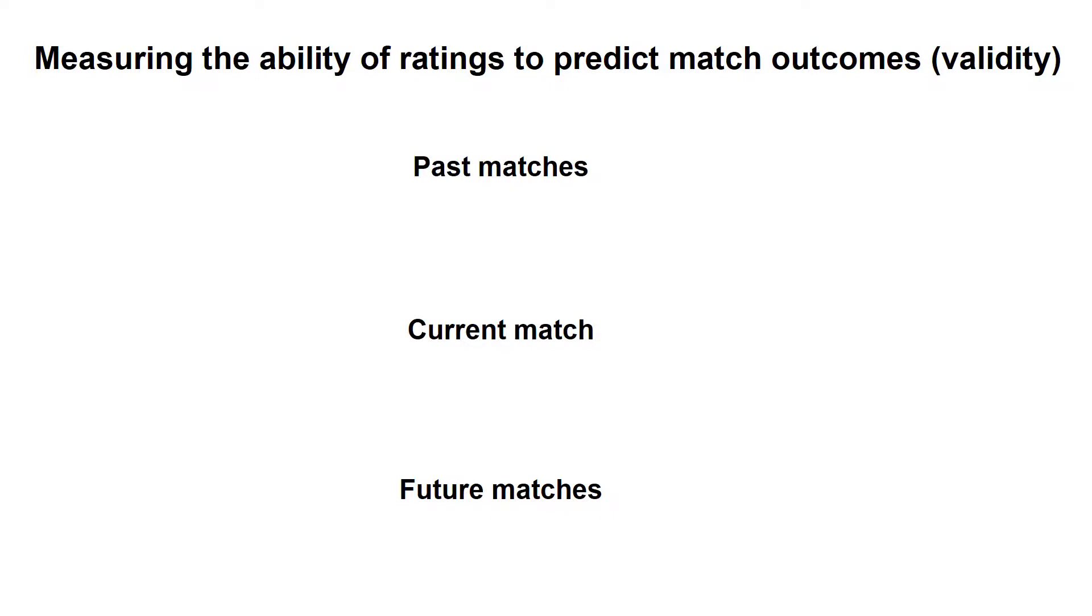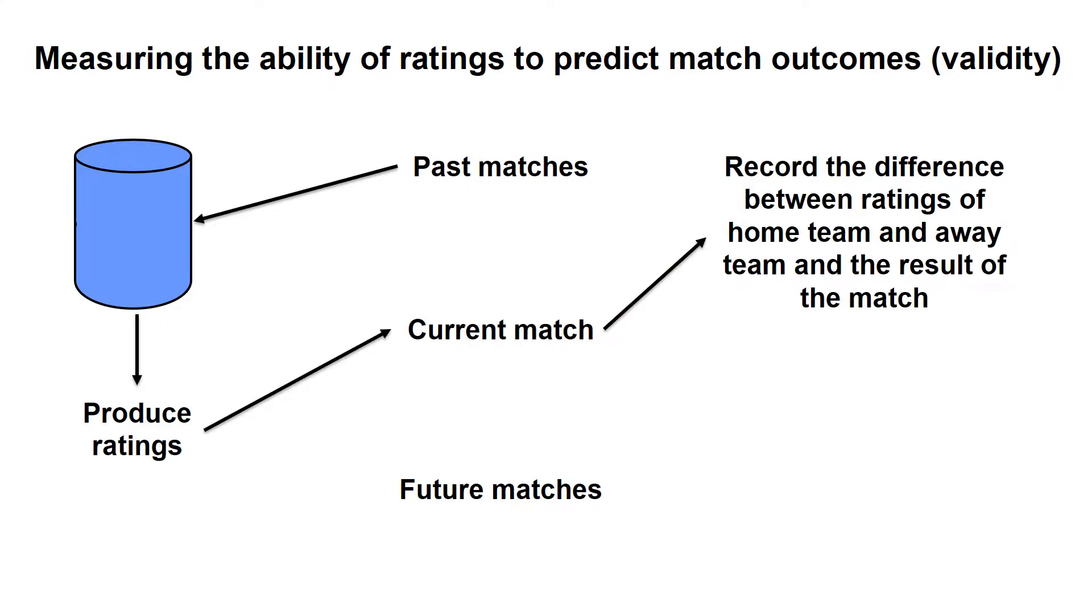Without getting too technical, here is the procedure used to evaluate how valid our ratings are. Starting with a set of past matches, we can use those to produce player ratings. For a given match, we can then calculate the difference between average ratings for the two teams, and we can record the actual outcome of the match. So basically, whether it was a home win, a draw or an away win.